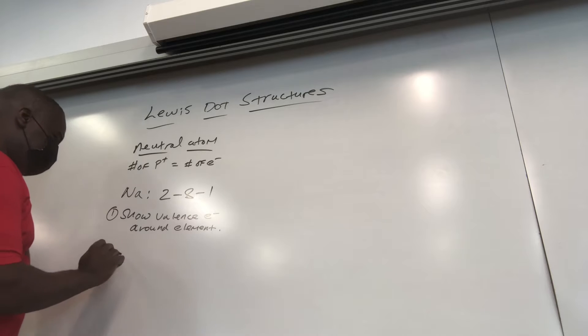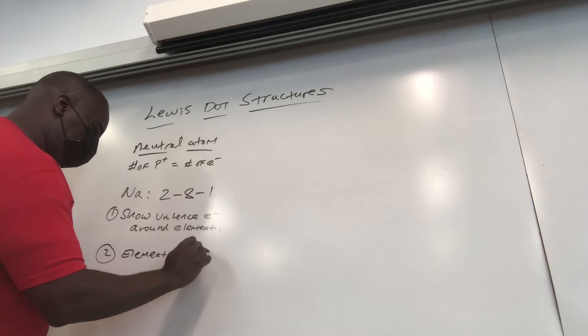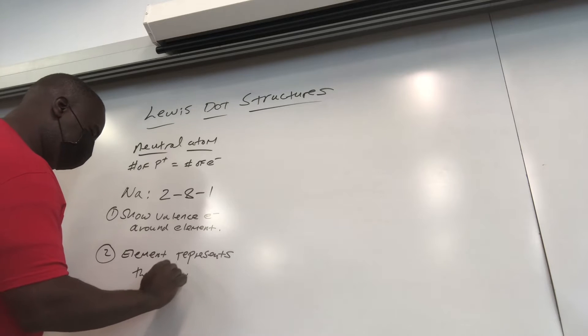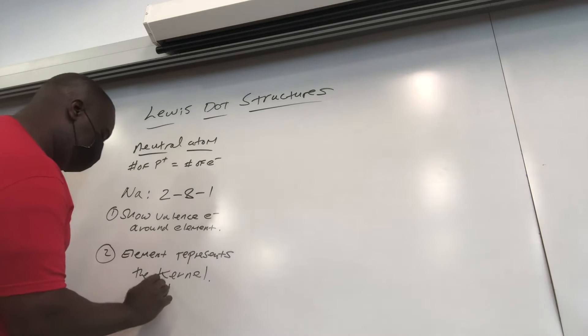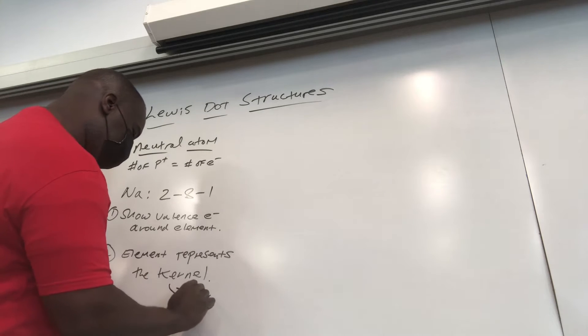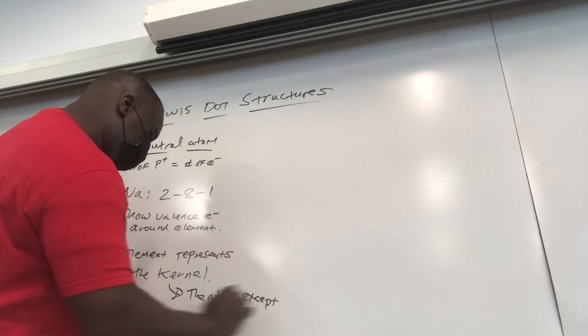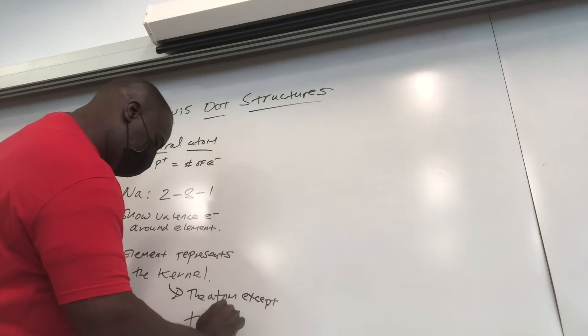Now for point number two, the element in the dot structure represents something called the kernel. Now the kernel, in turn, is the atom - all the atom except the valence electrons.